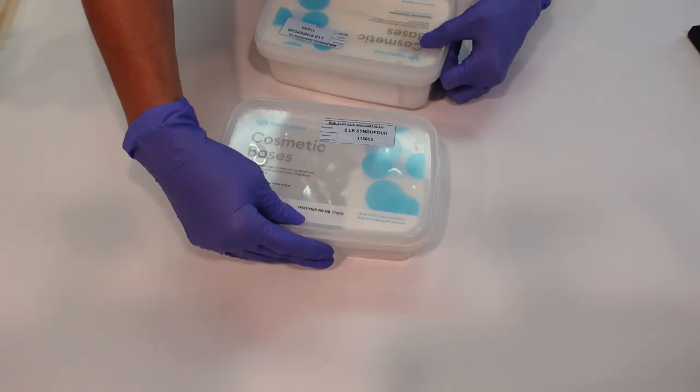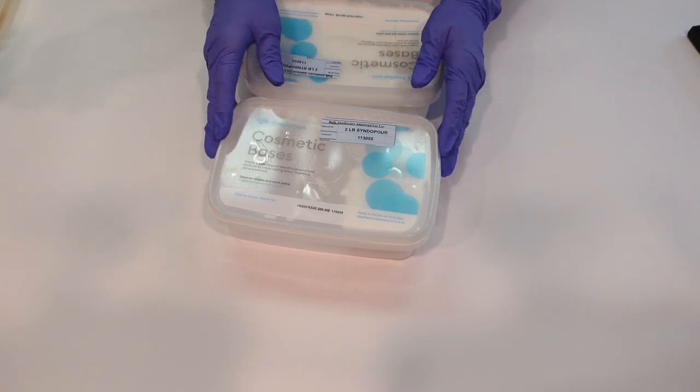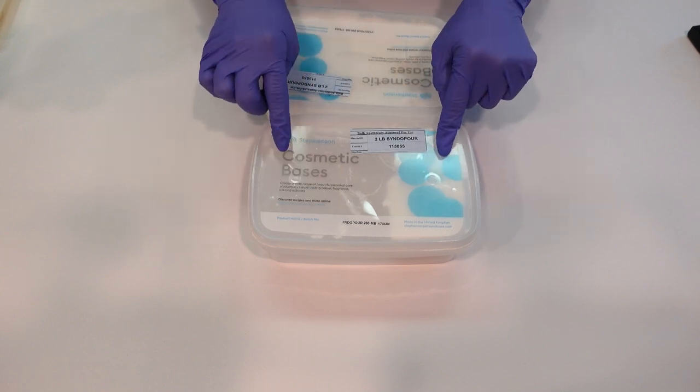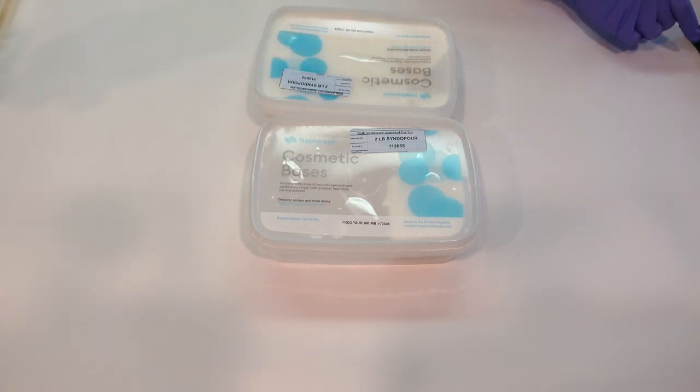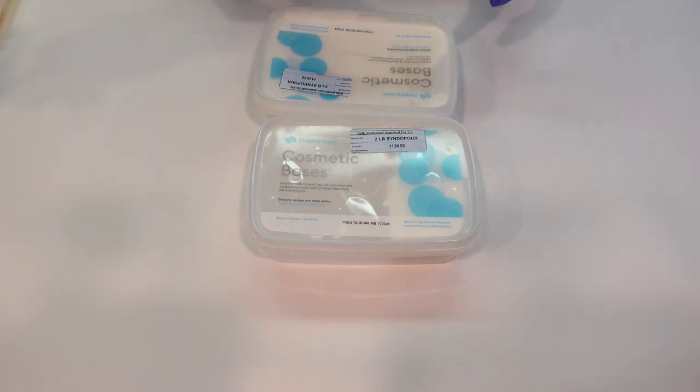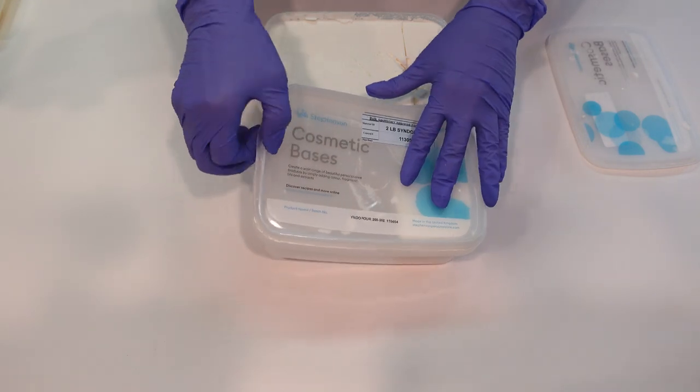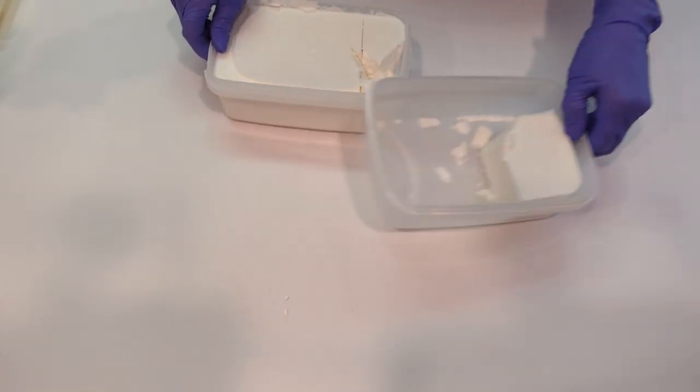The next thing we're going to do is weigh off our melt and pour base. You guys have seen me use this base before as a shampoo - I have done a melt and pour shampoo that's also available on my Patreon campaign using the same base. Some people have found that this base is a little bit soft. I don't have that problem with this base - I think it sets up nice and hard. So I'm going to cut this up to what we need for this recipe, weigh it off, and place it into this lovely little beaker right here.